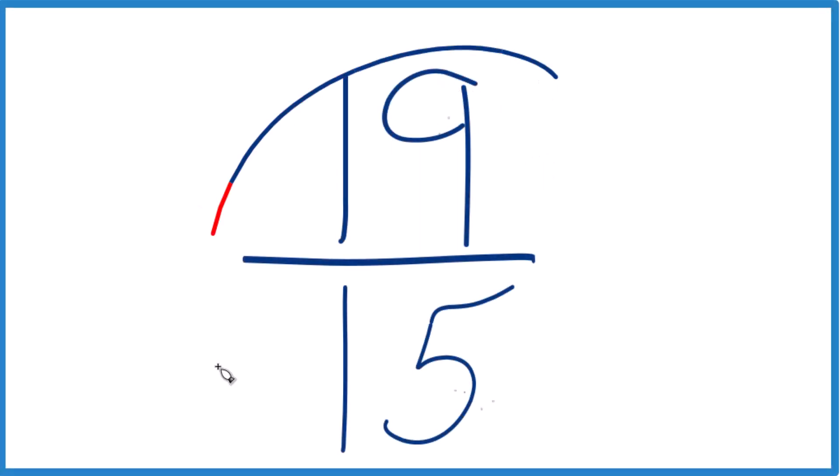Let's simplify the fraction 19/15 and then write it as a mixed number. So to simplify the fraction here, we need to find a number that goes, a whole number that goes evenly into 19 and 15. That's our common factor.